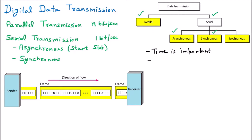Because time is important, synchronous transmission gives us high speed data transmission. If I am sending you a WhatsApp message and you are getting it immediately, that is high speed — because your mobile is synced with WhatsApp and it delivers the message right away. So obviously, high speed is attained.